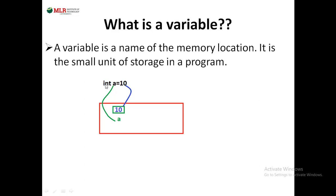For example, here I am declaring int a equals to 10. This 10 will be assigned to a — means this 10 will be stored in computer memory. That memory location name is called a variable.